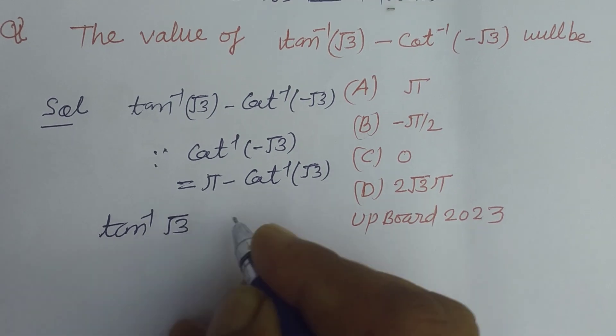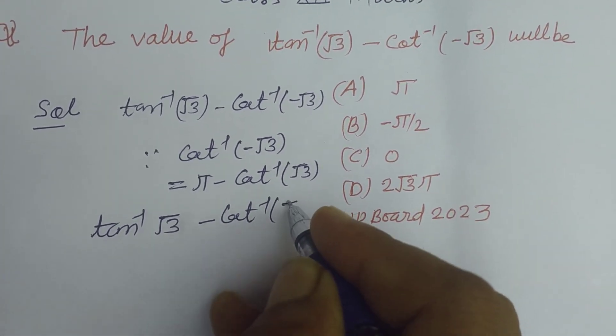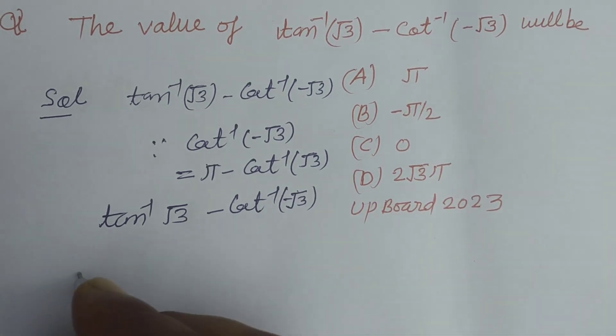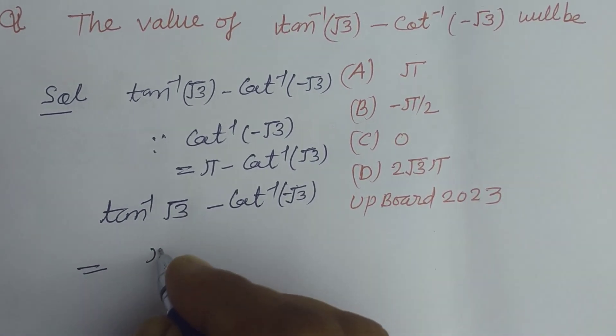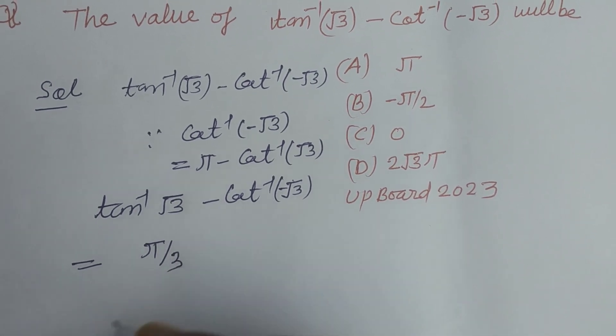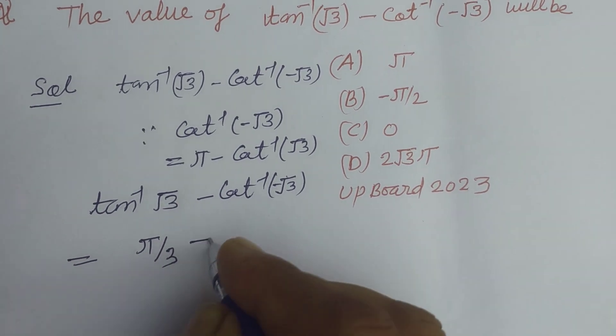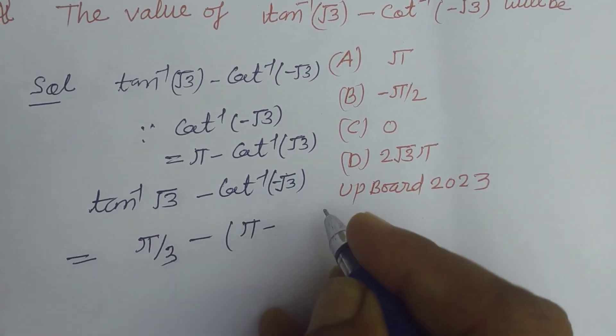we can easily find the value of tan^(-1)(√3) - cot^(-1)(-√3). So tan^(-1)(√3) is π/3, and we write the second term as π - cot^(-1)(√3).